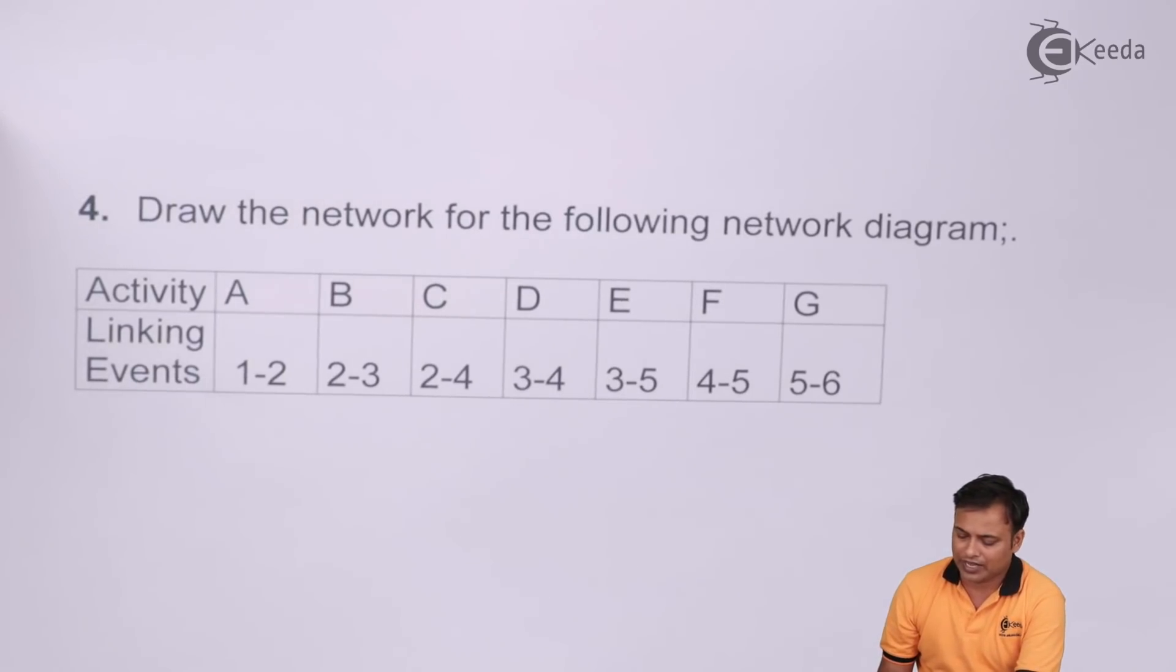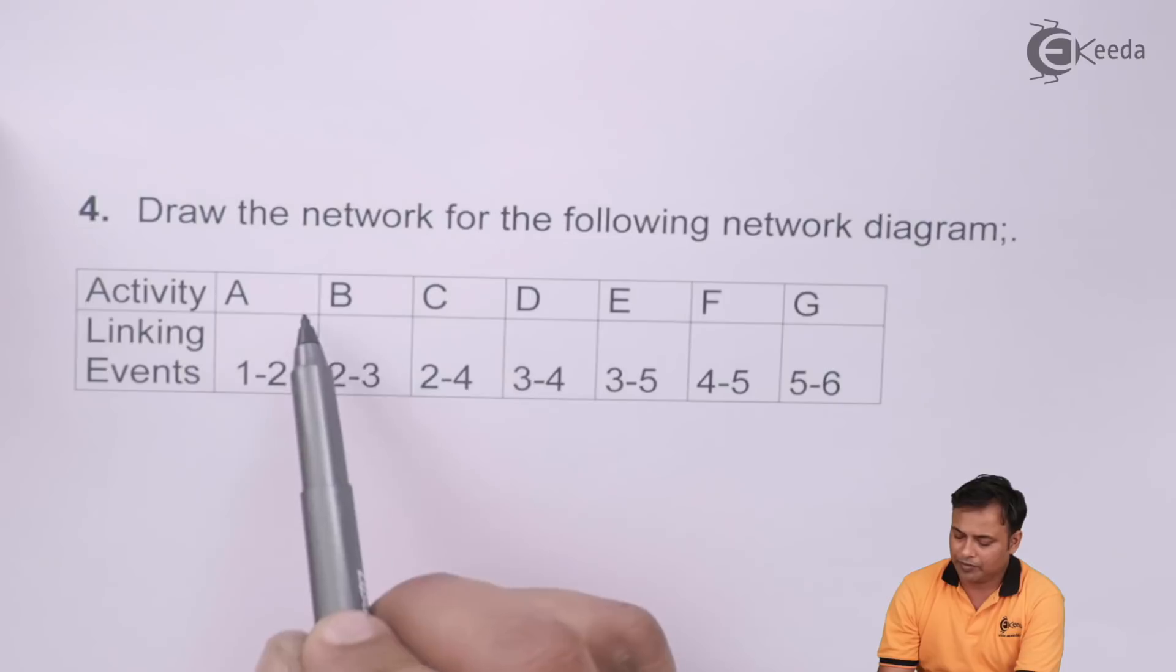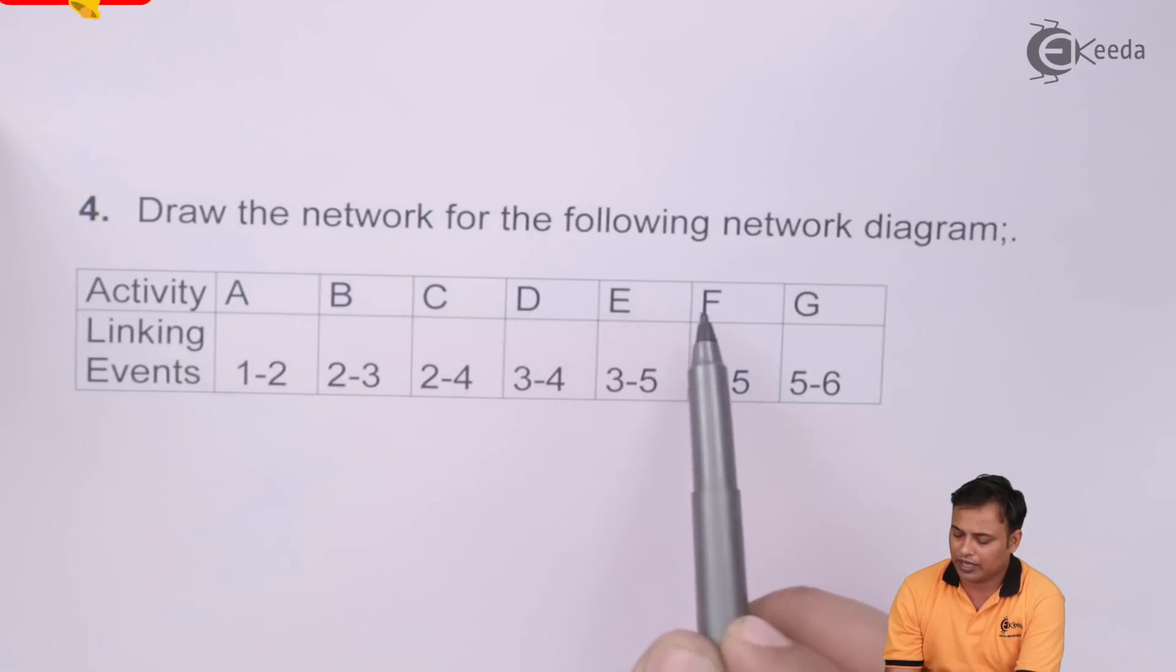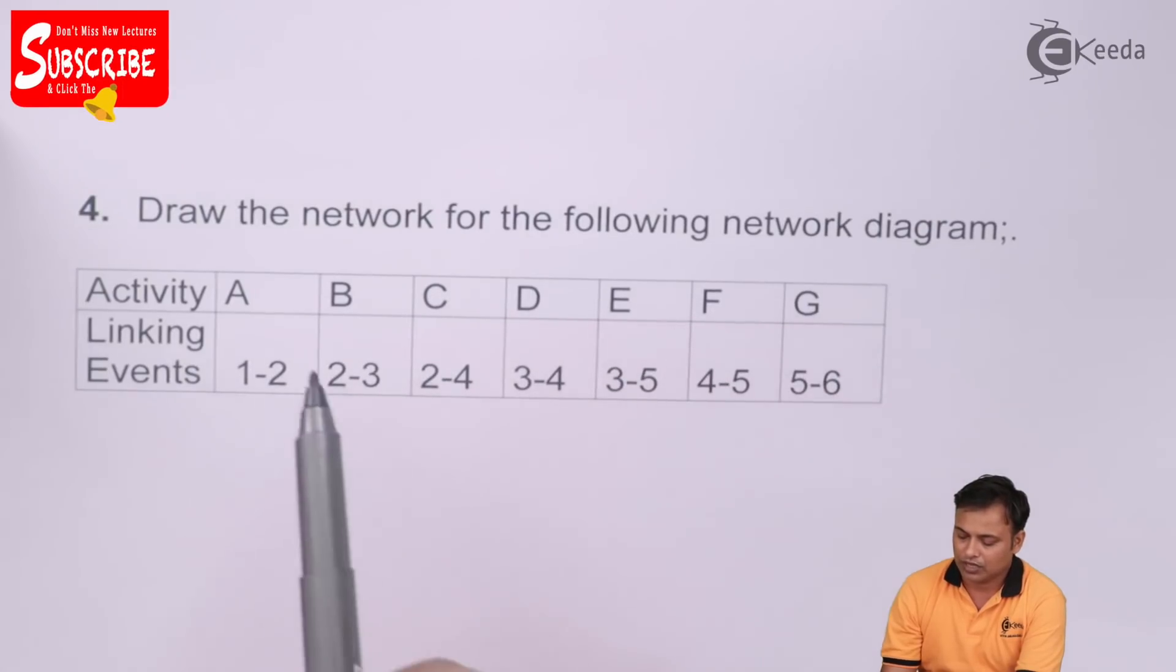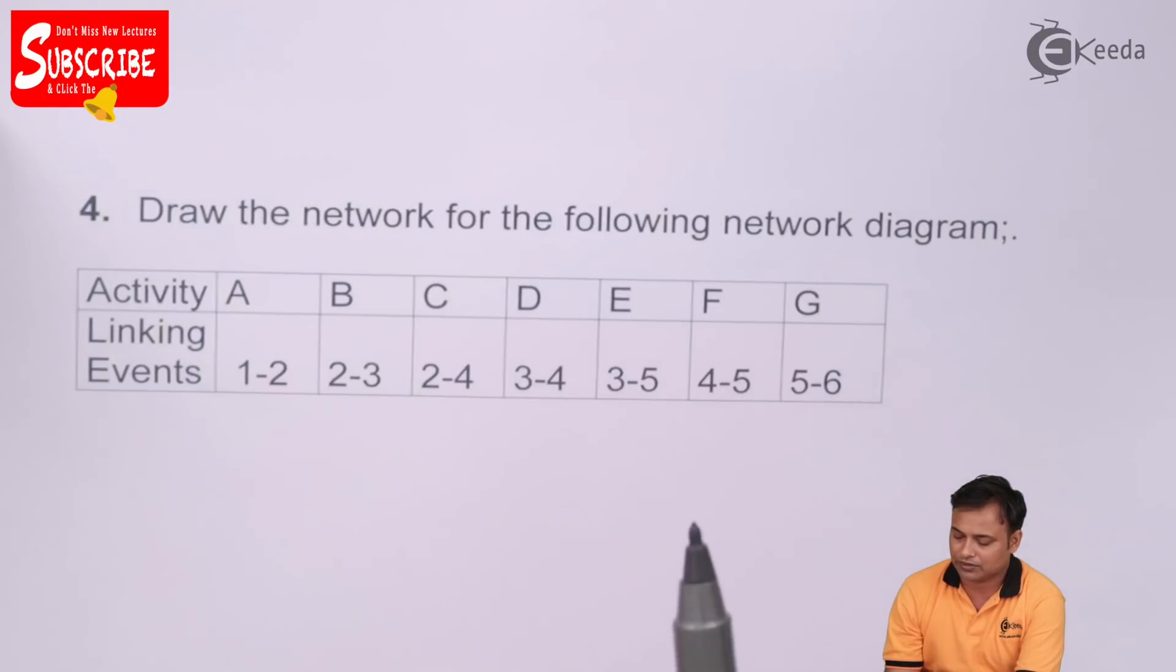Drawing network for the following network diagram. A, B, C, D, E, F and G are the activities and we are given the linking events here.